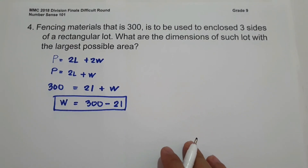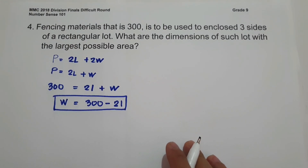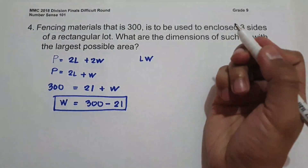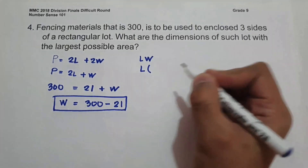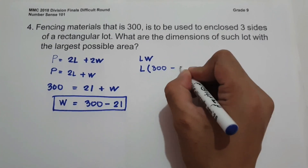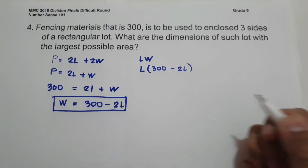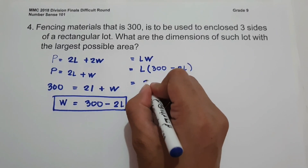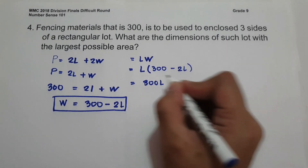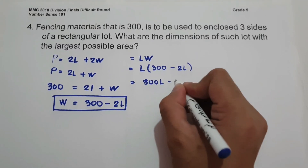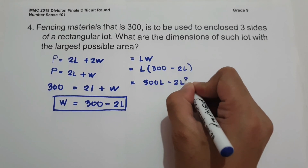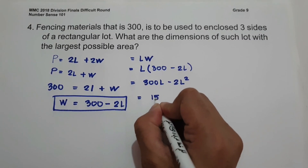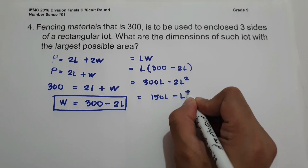Using the area formula A = L × W, we substitute W: A = L × (300 − 2L) = 300L − 2L². We can factor out 2: A = 2(150L − L²).